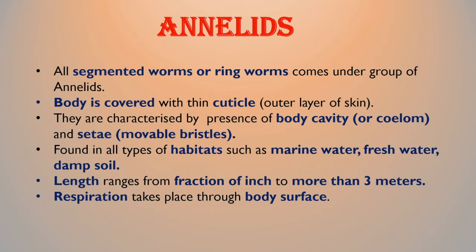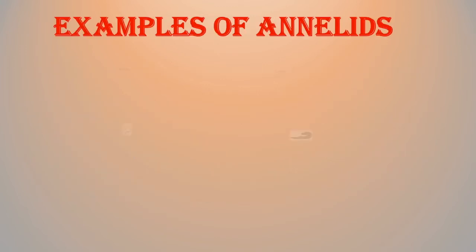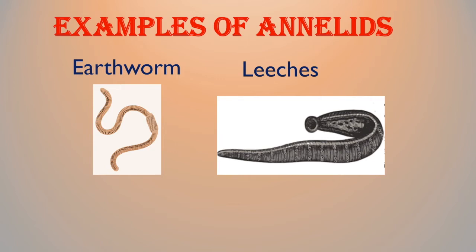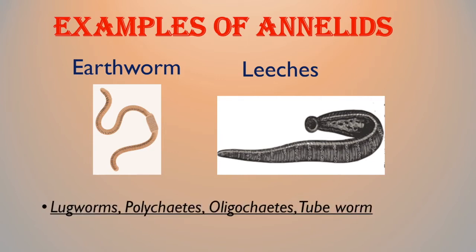They are found in all types of habitats such as marine water, fresh water, and damp soil. Their length ranges from a fraction of an inch to more than 3 meters. In these animals, respiration takes place through the body surface. Common examples of annelids are earthworms and leeches. Other examples are lugworms, oligochaetes, tubifex, etc.